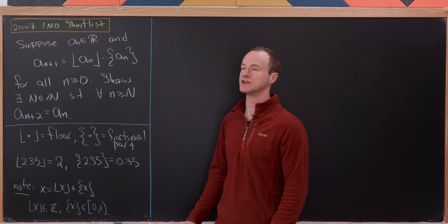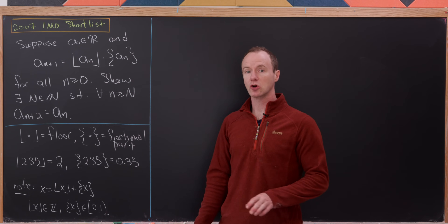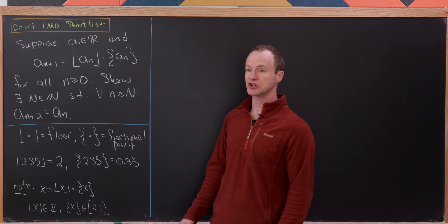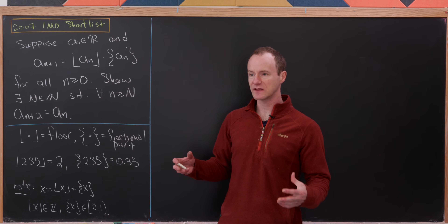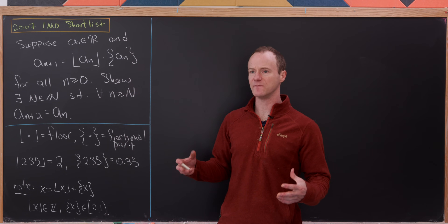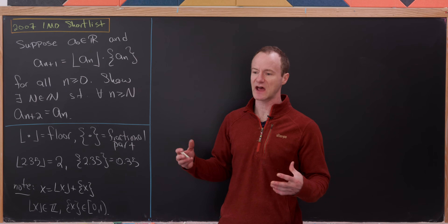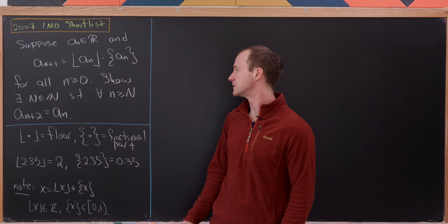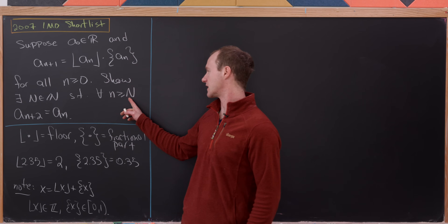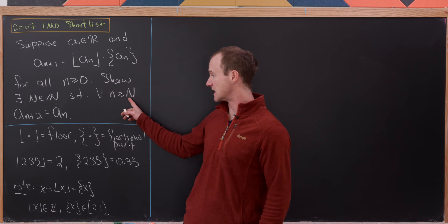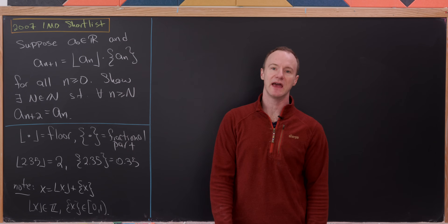This is a pretty cool definition for a sequence. Our goal is to show that at some point the sequence doesn't become fixed, but it becomes almost fixed — it has a period of two. In other words, there exists a natural number N so that if n is bigger than or equal to N, then a_{n+2} equals aₙ.